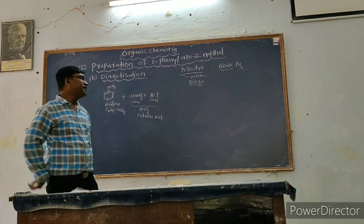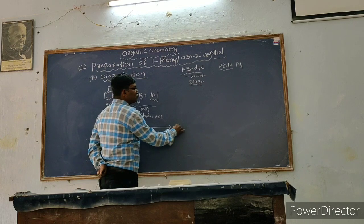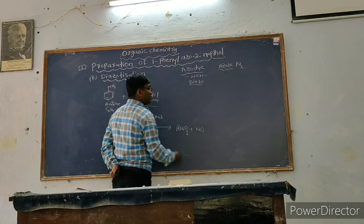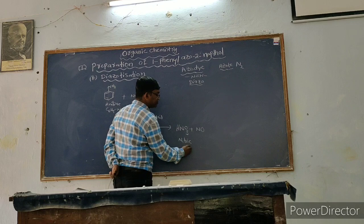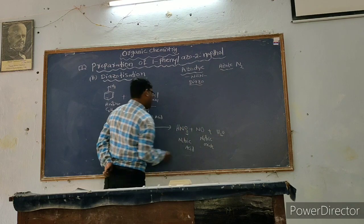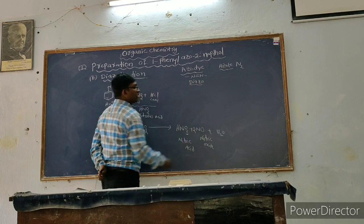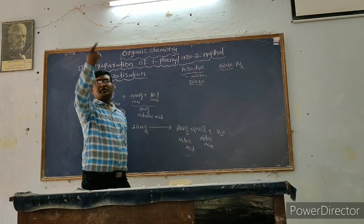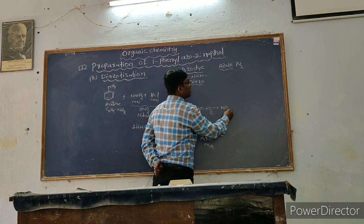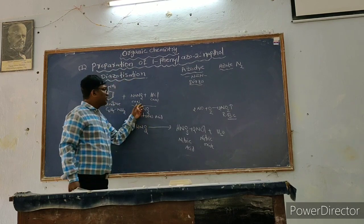Because at high temperatures, nitrous acid is unstable and decomposes into nitric acid and nitric oxide. Nitric oxide (NO) has no color, but whenever it reacts with oxygen immediately, it forms nitrogen dioxide, which is a reddish-brown color gas.